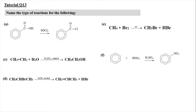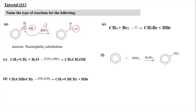Moving on to question 13, we have to name the type of reaction for the following. From a benzene ring attached with C=O-OH, applying SOCl₂ forms C=O-Cl. What's changing is OH being replaced with Cl. This is a substitution reaction because a group is being replaced. It is a nucleophilic substitution reaction because the nucleophile Cl⁻ — produced by SOCl₂ — attacks the electrophilic δ⁺ side, and OH is removed.